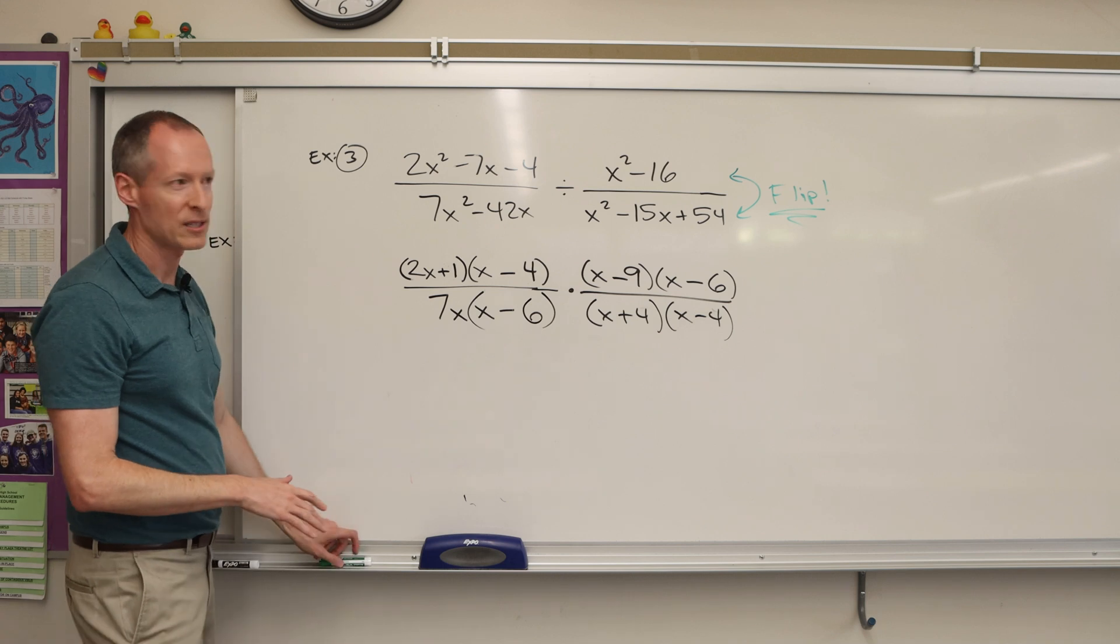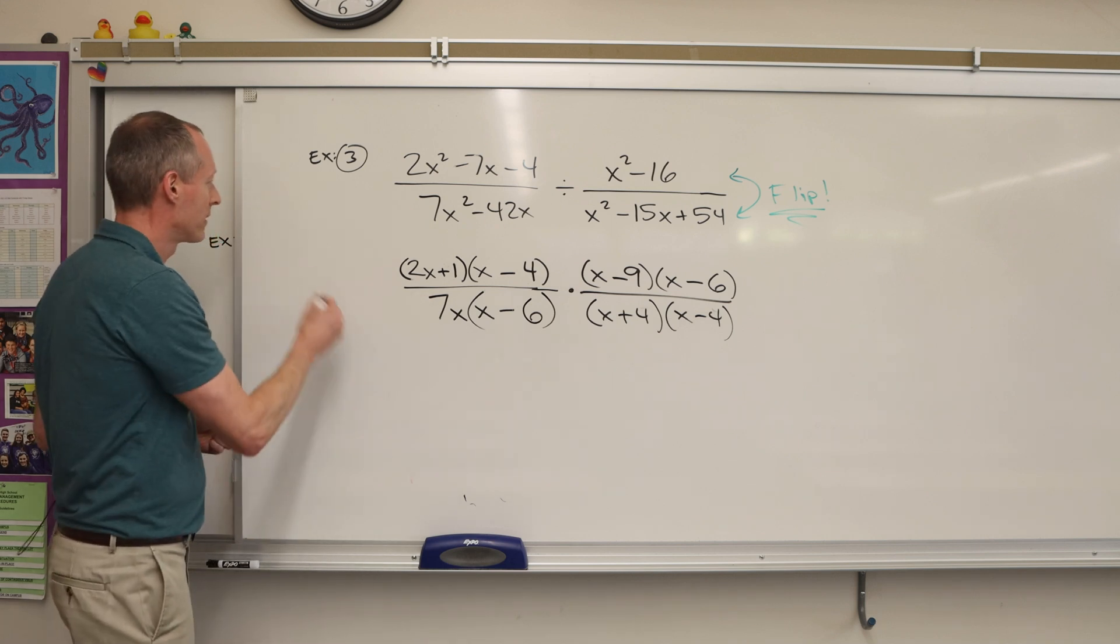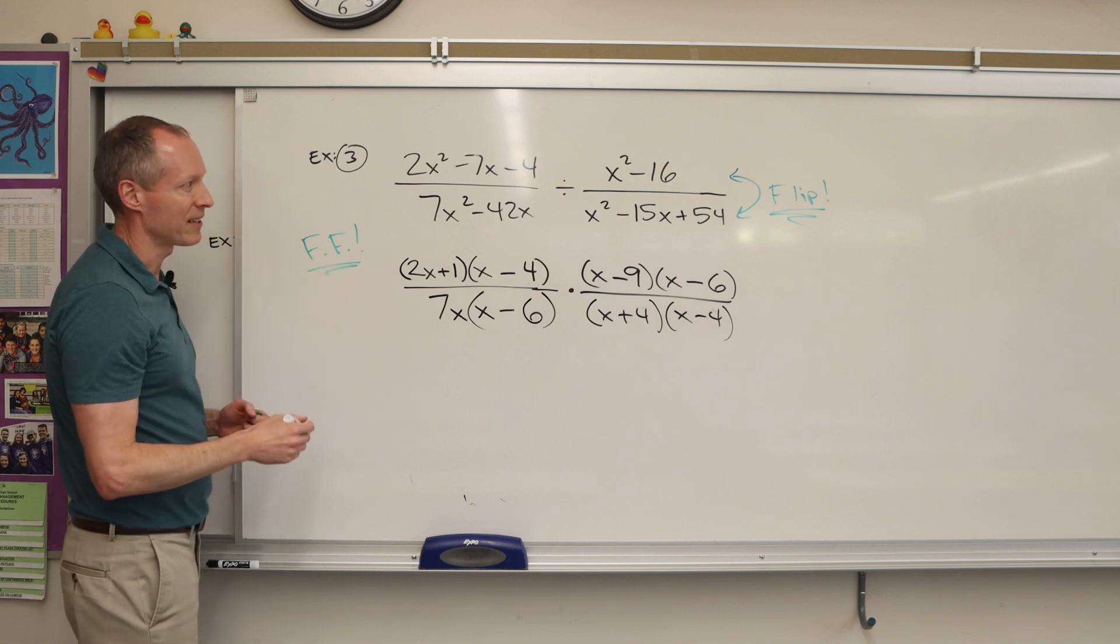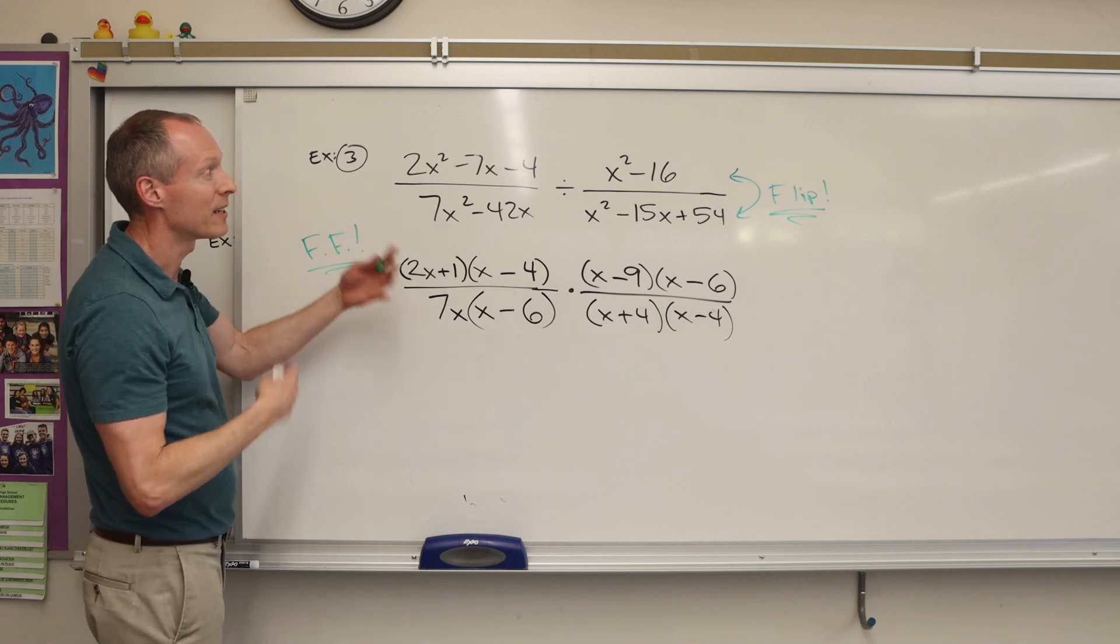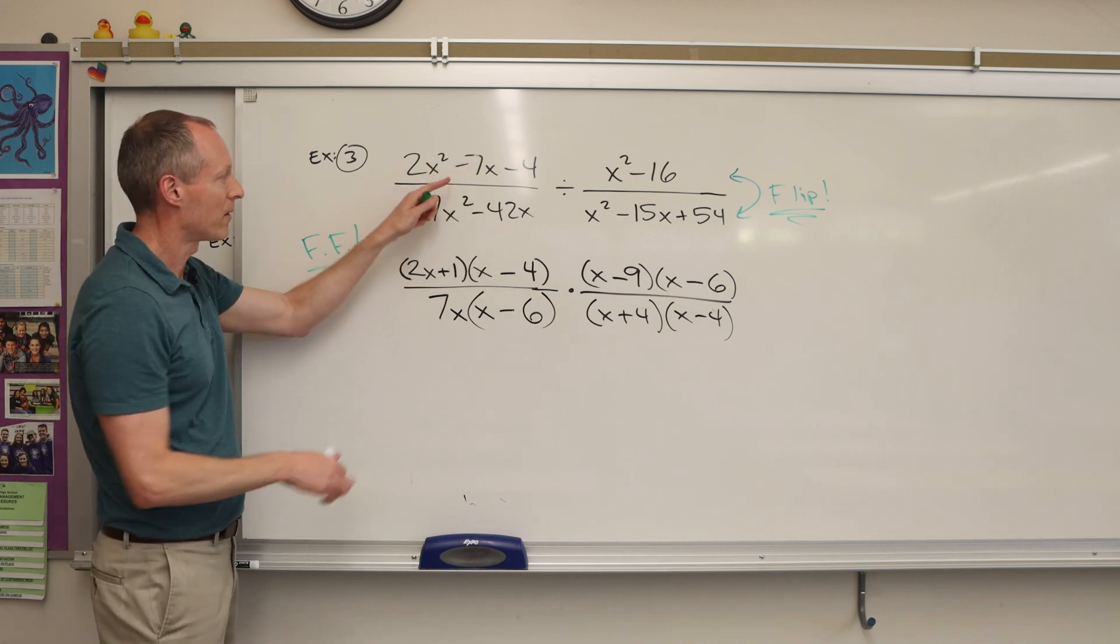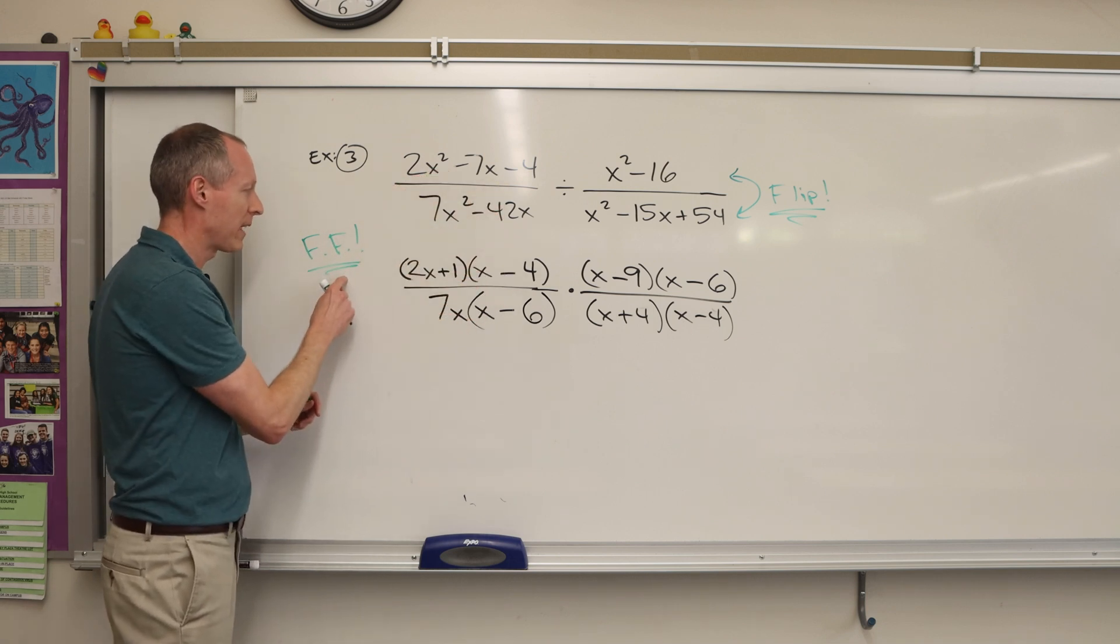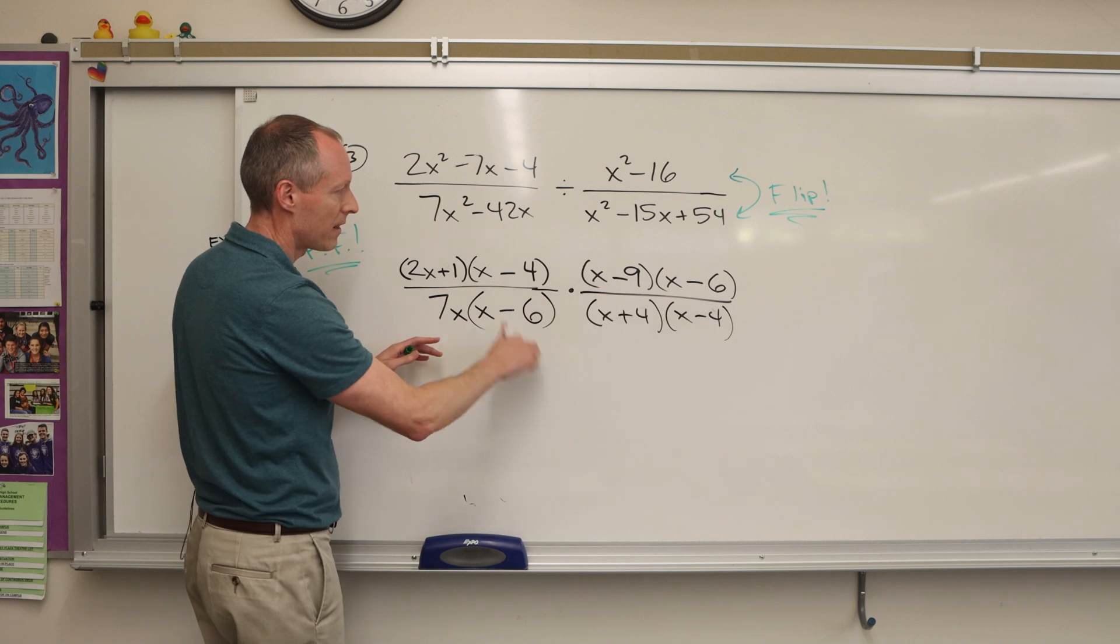So you have to factor first and then cancel. I see this. Those are identical. x minus 6. Those are identical. There is not another 2x plus 1. There's not an x minus 9. There's not an x plus 4.